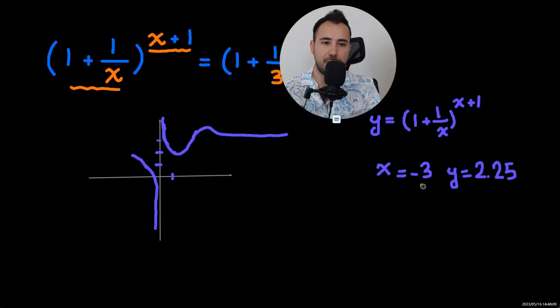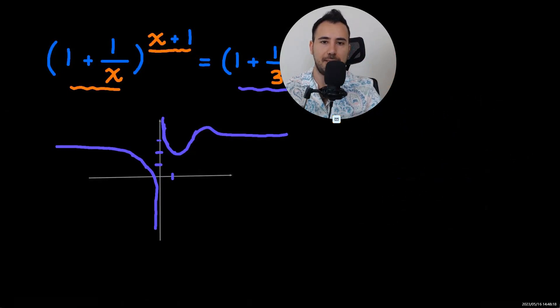So we'll see that it's increasing and then it's going to approach a certain number. To find that certain number I just came up with x = negative 100. So that's what the graph looks like.